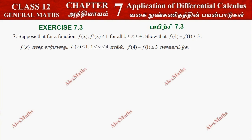Hi students, this is Alex here. Section 7.3, question number 7. Suppose for the function f of x, f dash of x is less than or equal to 1, for all 1 less than or equal to x less than or equal to 4.